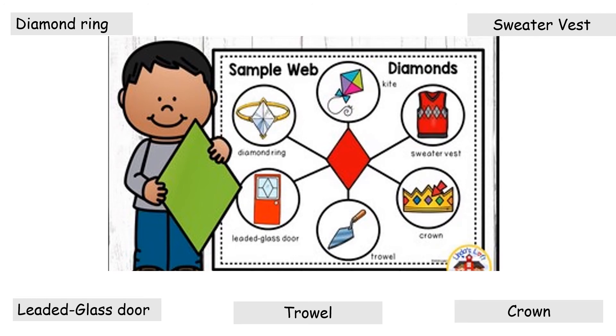The gems in the crown have the shape of a diamond. Do you see the colors of those gems? Green, purple, and blue gems. What a shiny crown.